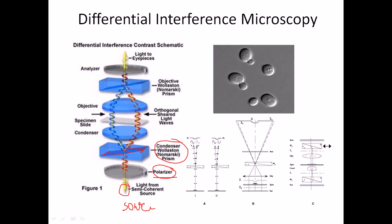Whenever the polarized light — where all electric vectors except one oscillation type have been cut out — enters the Wollaston prism, it is divided into two different beams. You can see two separate beams being created. Right after separating into two beams, the light finally encounters the condenser, which condenses the light onto the specimen.